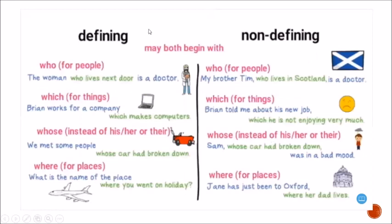Now let's check the use of relative pronouns with defining and non-defining relative clauses. Both types may begin with 'who,' which we use when we talk about people. Defining example: 'The man who lives next door is a doctor.' Non-defining example: 'My twin brother, who lives in Scotland, is a doctor' — notice the commas around the relative clause.